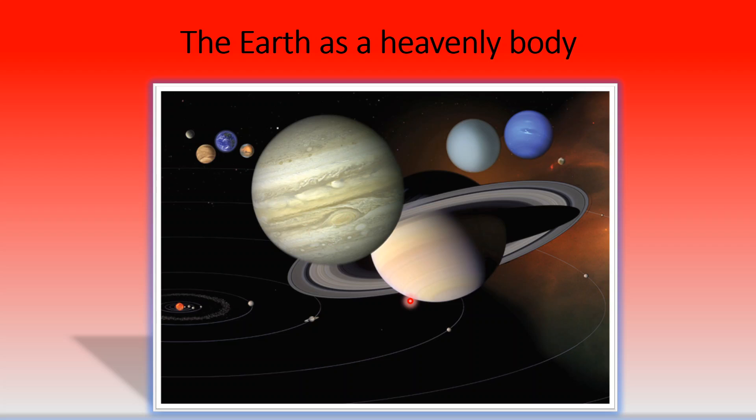All heavenly bodies such as the Sun, the Moon, the planets are all spherical in shape and it is mainly because of the rotation. So the Earth being a member of the large heavenly bodies cannot be an exception. The Earth is a heavenly body and it is spherical in shape.